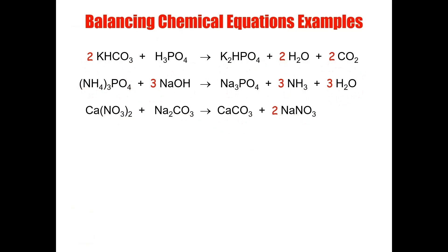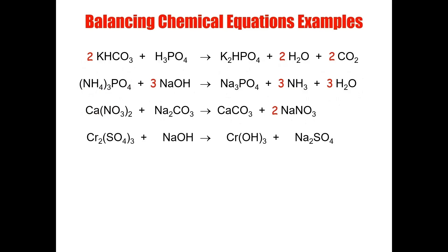By doing that, I've changed the number of sodium. Rule number two states that if I've changed the number of elements in step one, I need to balance that element. Because I have two sodium here and two sodium here, I'm actually balanced. Let's take stock: one calcium and one calcium, two nitrate and two nitrate, two sodium and two sodium, one carbonate and one carbonate. Just by treating my polyatomic ions as single units, I've completed the balancing of this reaction.